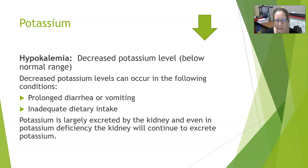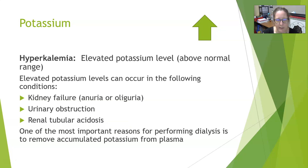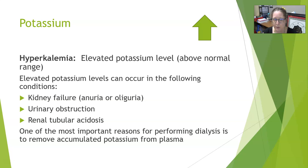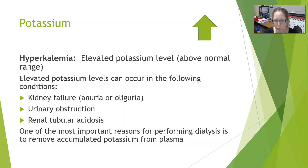Even in potassium deficiency, the kidney continues to excrete potassium because there is no conservation mechanism for potassium like there is for sodium. Hyperkalemia is an elevated potassium level above the normal range. Elevated potassium can occur in kidney failure with anuria or oliguria — either complete lack of urine production or very little urine production. Since the kidneys normally just excrete potassium, if they're not working, potassium backs up in the blood causing elevated blood potassium levels. Urinary obstructions can do the same thing, as elimination is blocked and potassium accumulates.